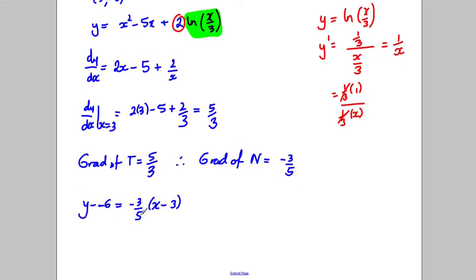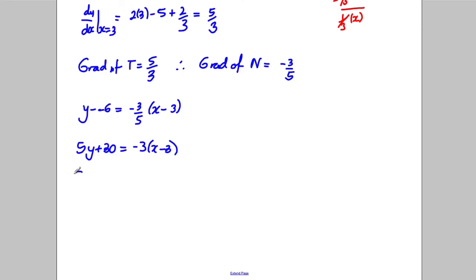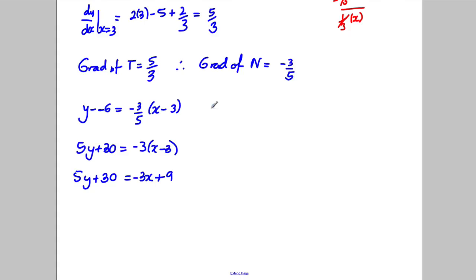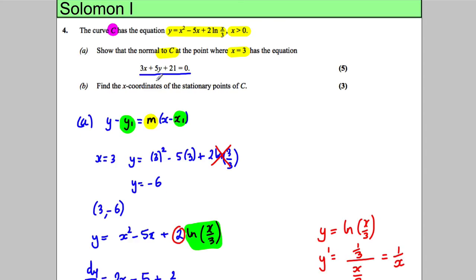At this stage I've multiplied by the 5, and these y subtract negative 6 is y plus 6. So times them by 5, I get 5y add 30 equals negative 3, x subtract 3. And 5y add 30 equals negative 3x add 9. Now let's just take a look how it said it wanted it in the question. It said it wanted you to show it in that form with 3x. So I'm going to add 3x to both sides and take off 9. I get 3x add 5y plus 21 equals 0. And that's exactly what I wanted in the question.